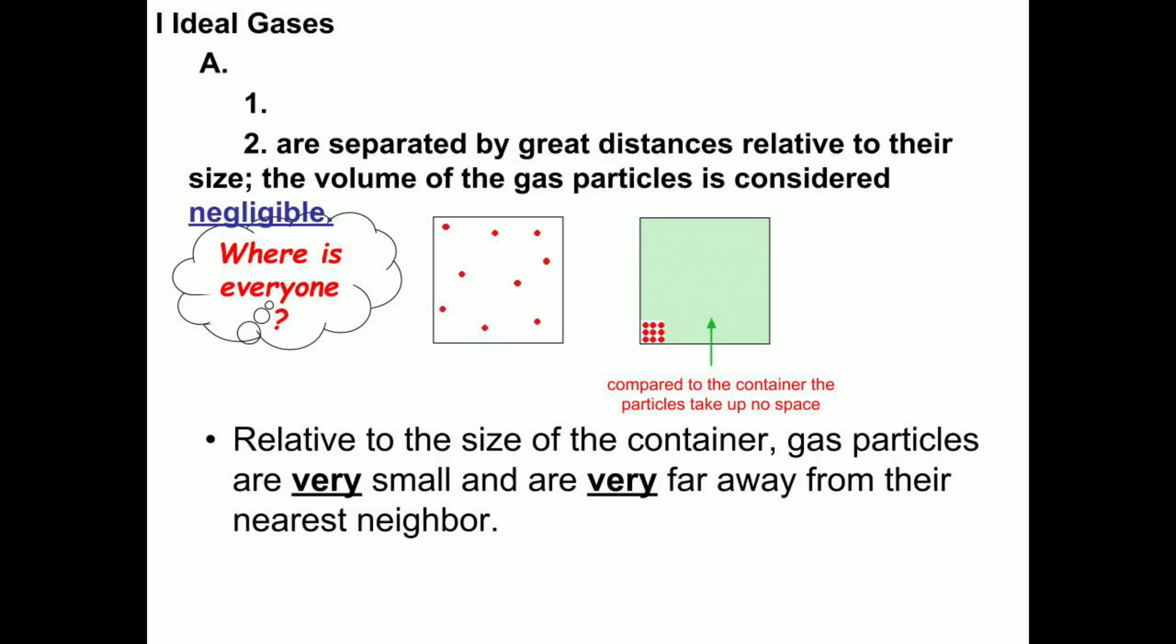The other assumption of the kinetic molecular theory is that gas particles are so small relative to the empty space that surrounds them that gas particles have no real volume. Look at the green container. The green container shows the volume of the container, or the empty space. The red particles are the atoms, or molecules, of gas. Compared to the green container, the red particles take up basically no space.